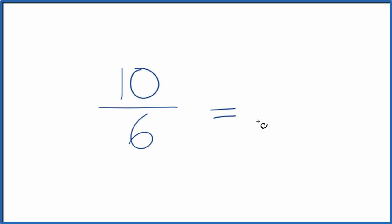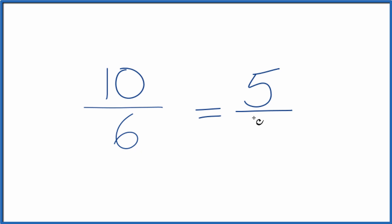To do that, we need to find a common factor, something that goes into 10 and 6. So when we look at this, since they're both even, let's just divide both of them by 2. 10 divided by 2 is 5. 6 divided by 2 is 3, and we can't reduce this any further.